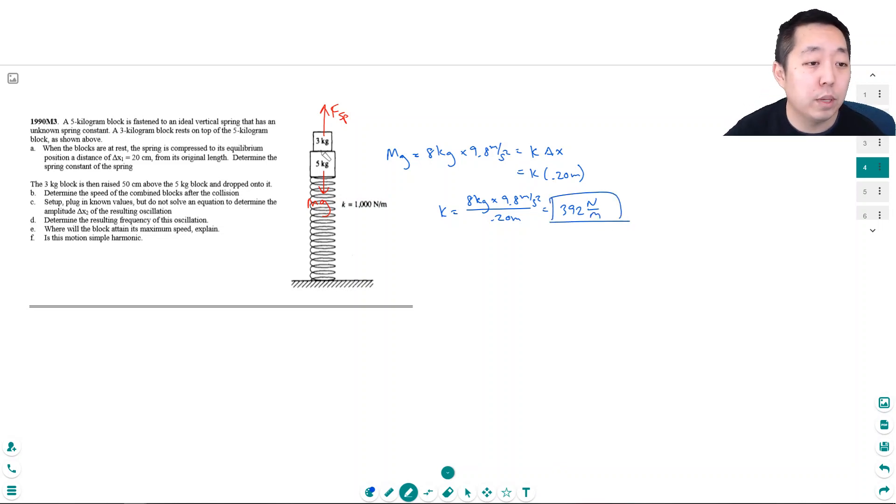The three kilogram block is then raised 50 centimeters above the five kilogram block and dropped onto it. I don't know what the heck this is, this doesn't make any sense that they're asking you to find the k and then I put this 1000 in here. This 1000 has nothing to do with anything as far as I can tell.